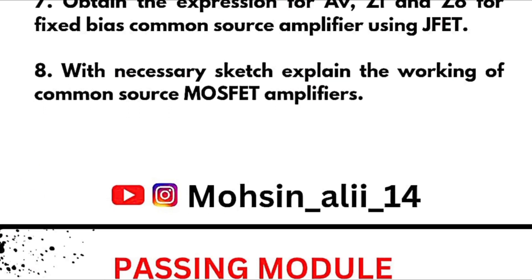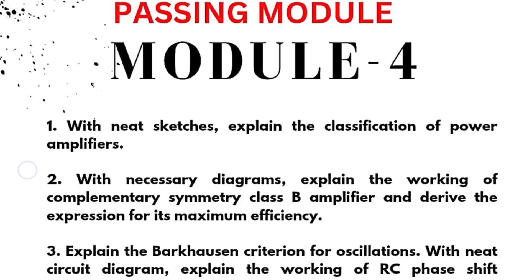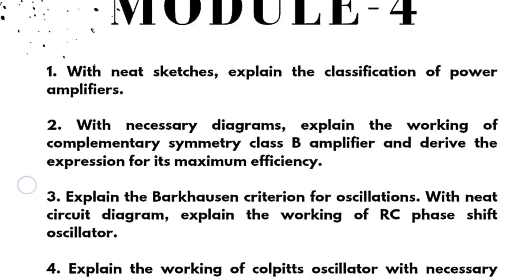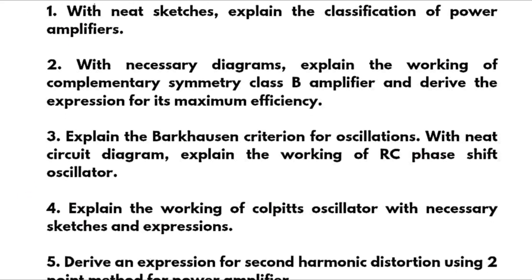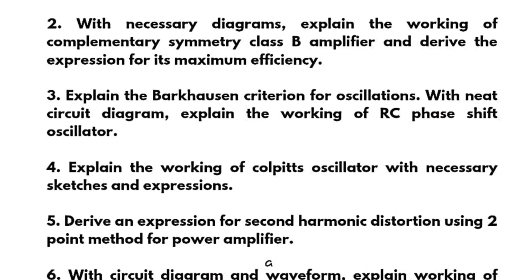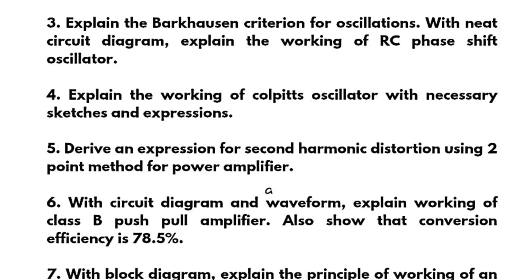These are the eight questions which should be at your utmost priority. Next we have module 4, again a passing module. With neat sketches, explain the classification of power amplifiers — most important one, you should not neglect this question at any cost. With necessary diagrams, explain the working of complementary symmetry class B amplifier and derive the expression for its maximum efficiency. Explain the Barkhausen criterion for oscillations, and with neat circuit diagram, explain the working of RC phase shift oscillator. Explain the working of Colpitts oscillator with necessary sketches and expressions.